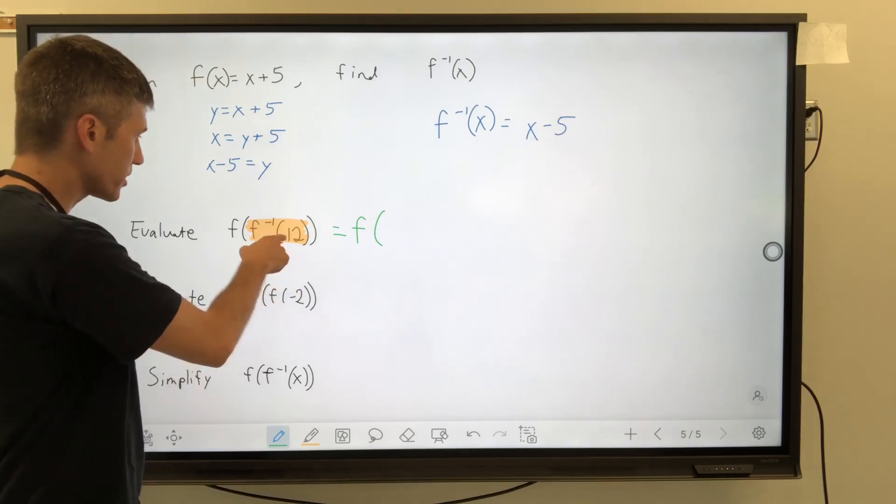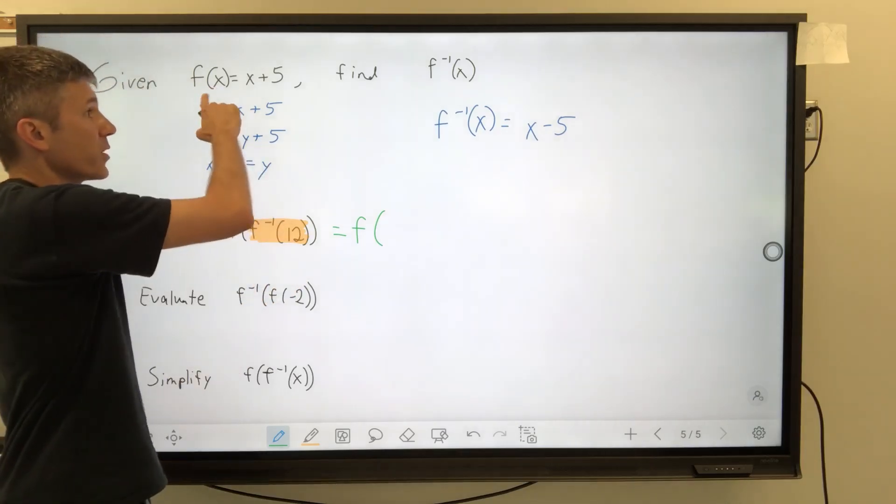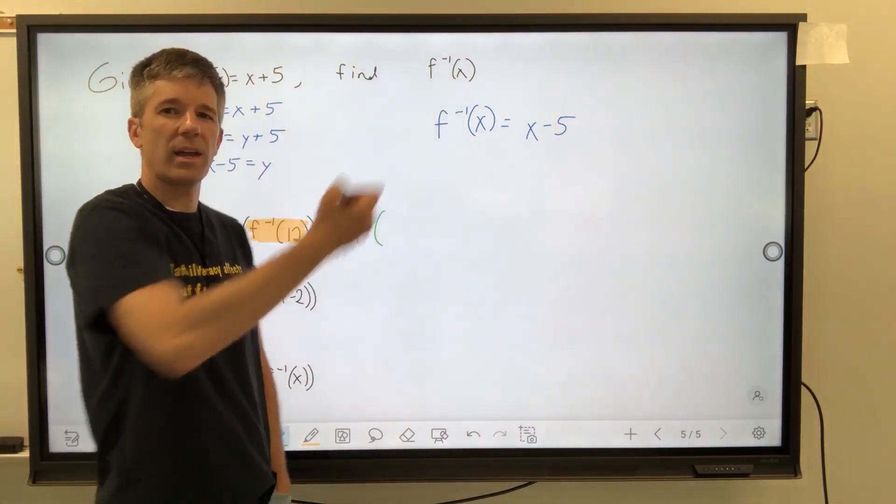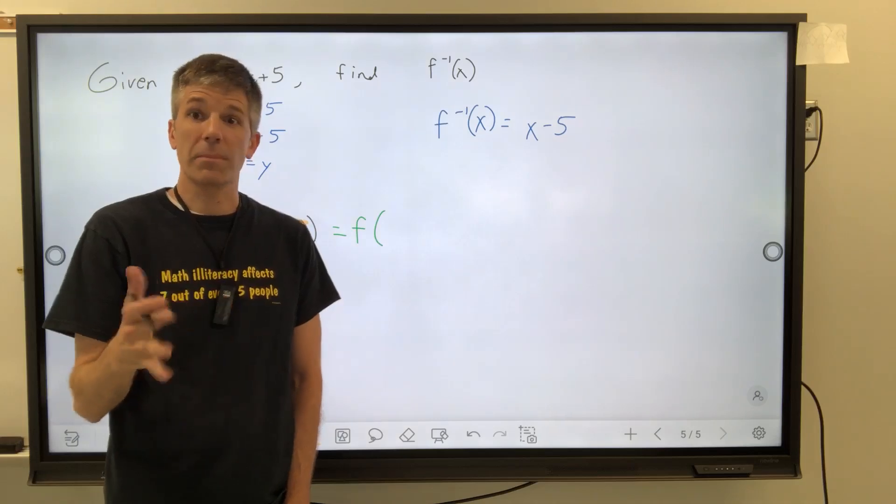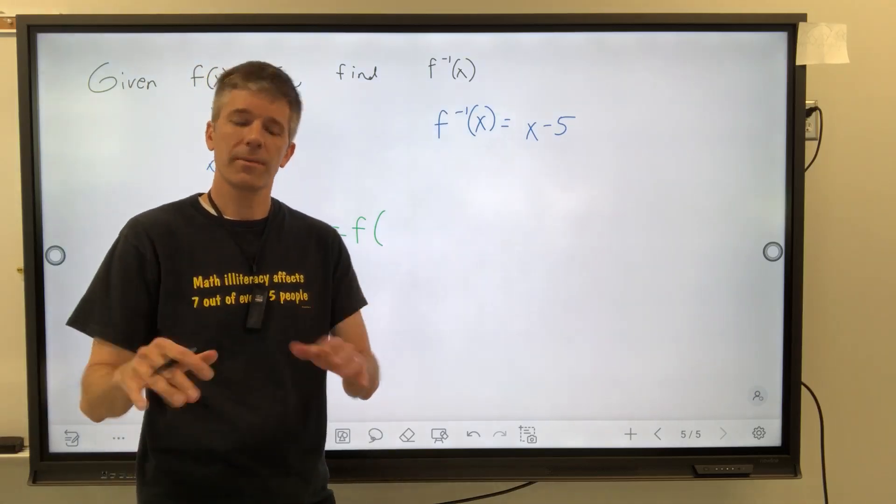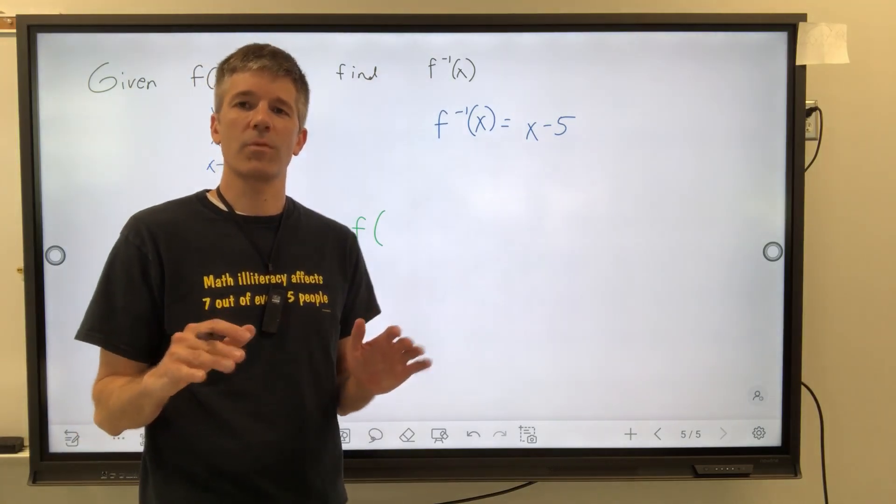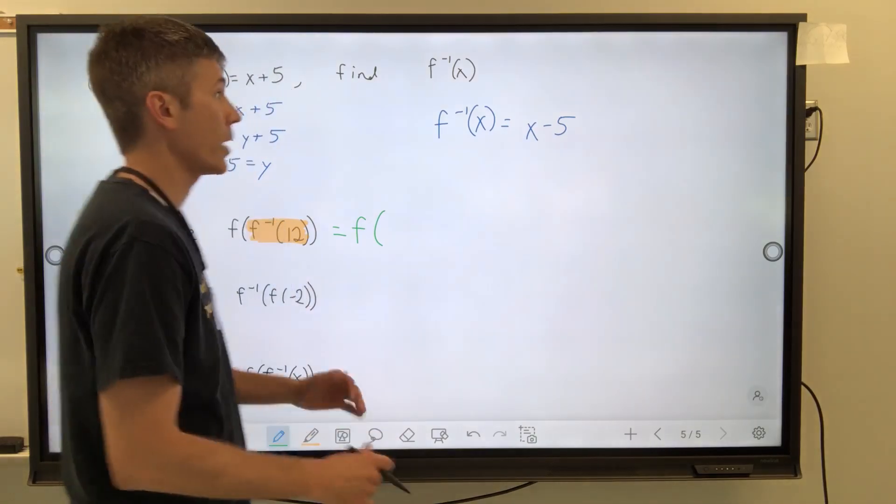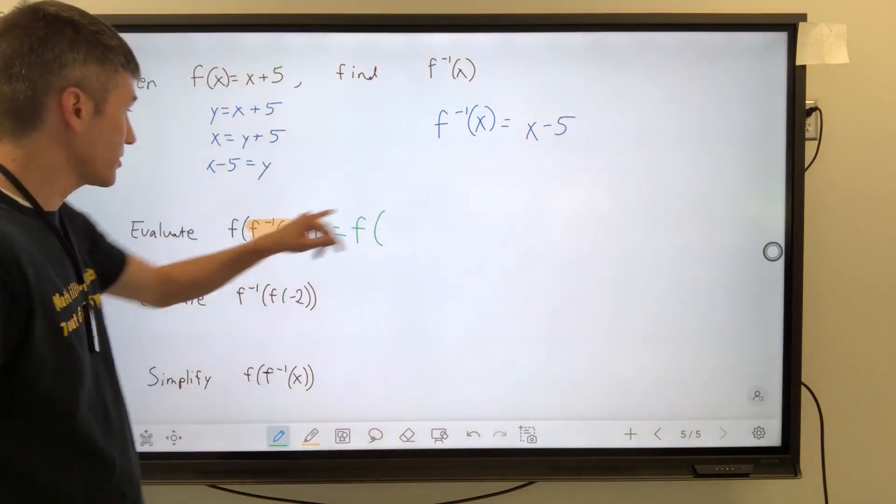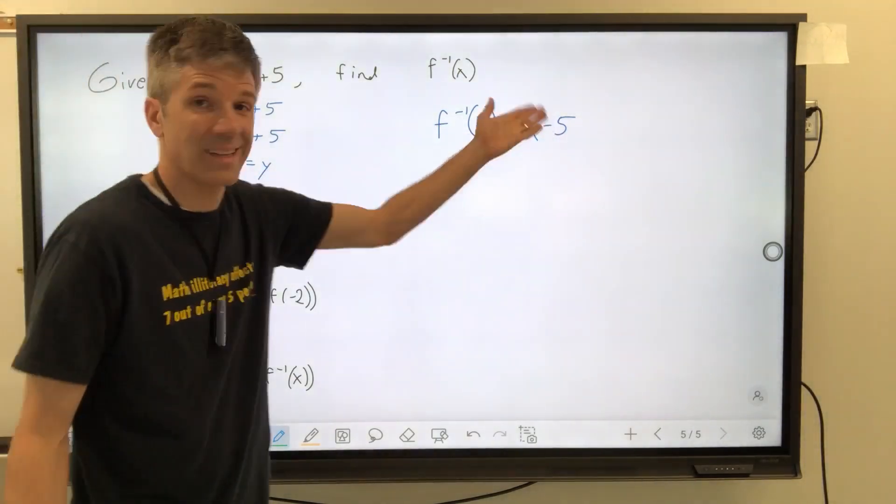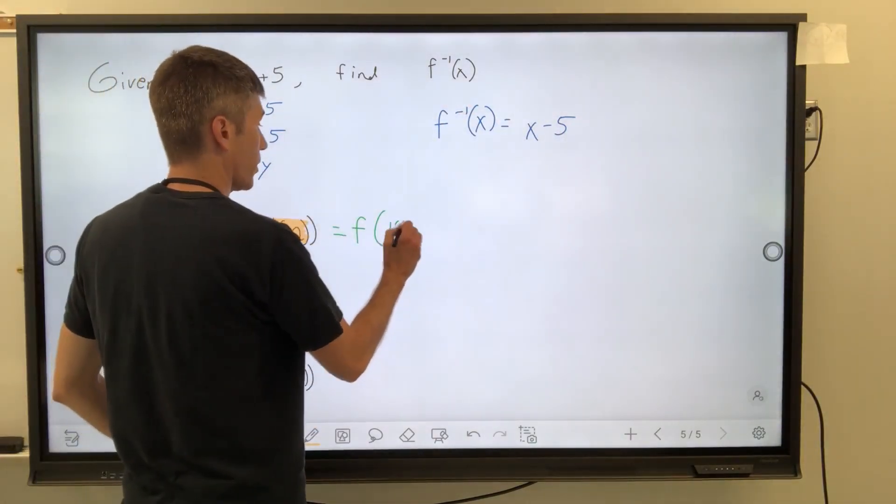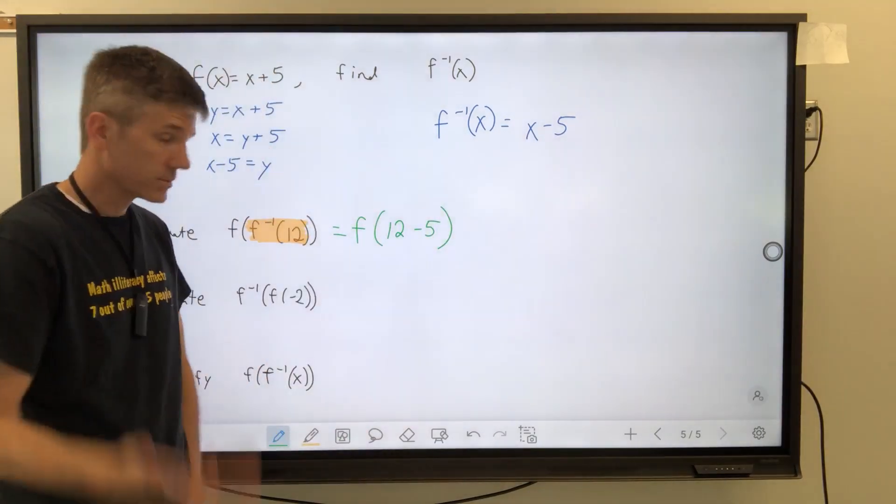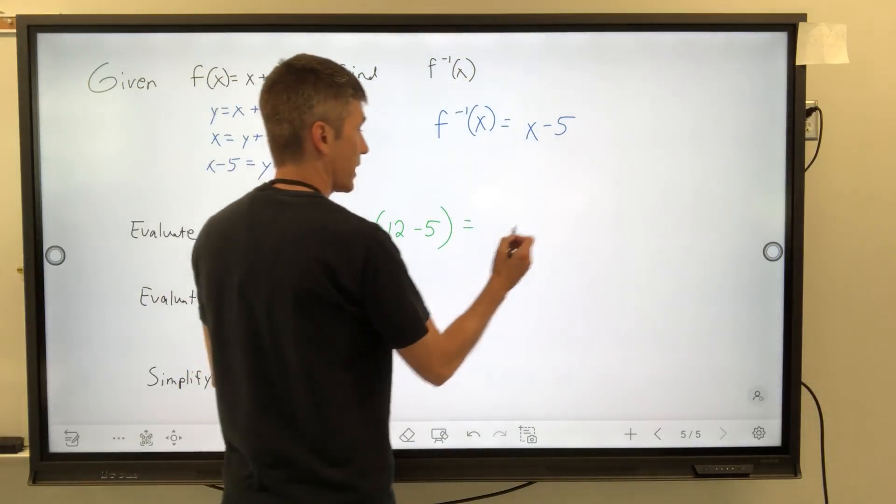This is the way it was taught in the video on compositions of functions. Let's find out what that is first. The very first thing I'm going to do is work my way from the inside out. What about this f? It stays. It waits. It just waits its turn. So f inverse of 12. I'm going to plug 12 into not the f function, but the inverse function.